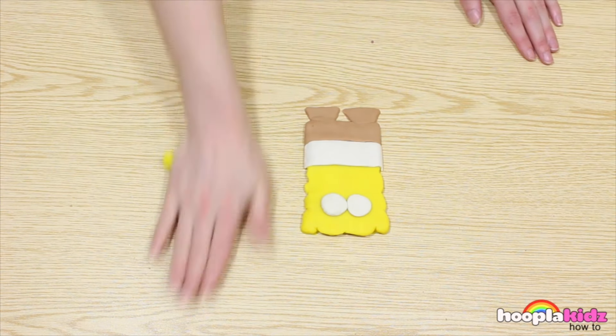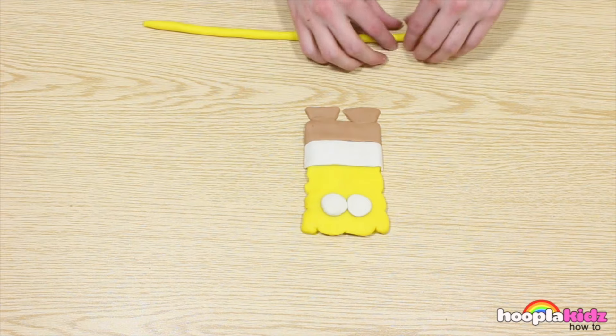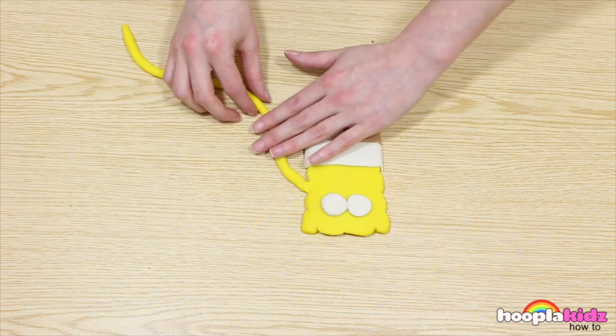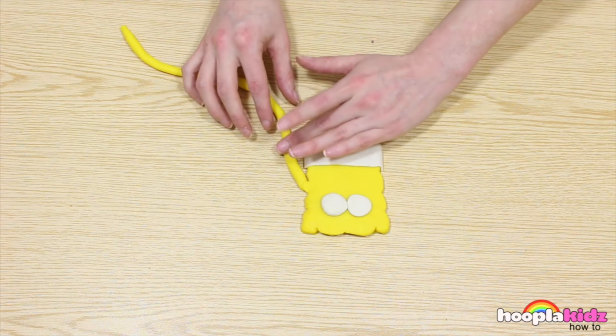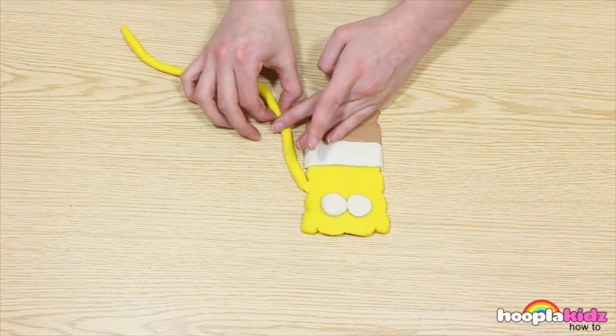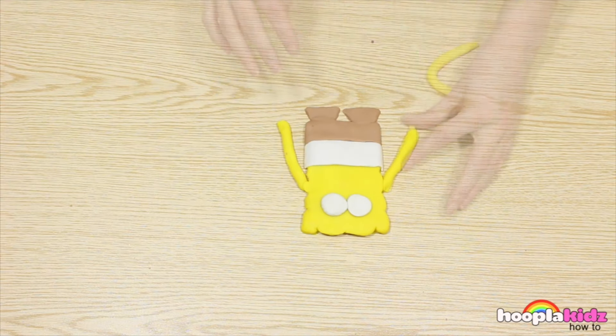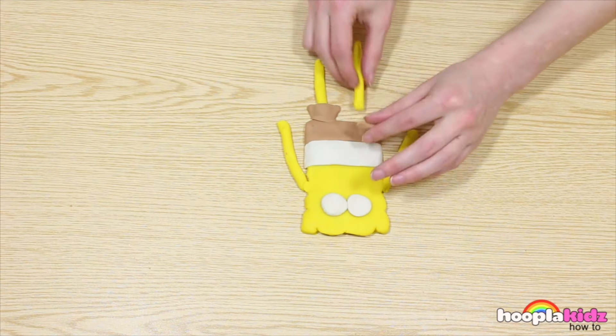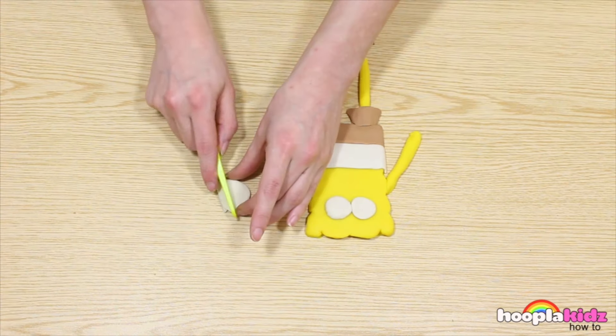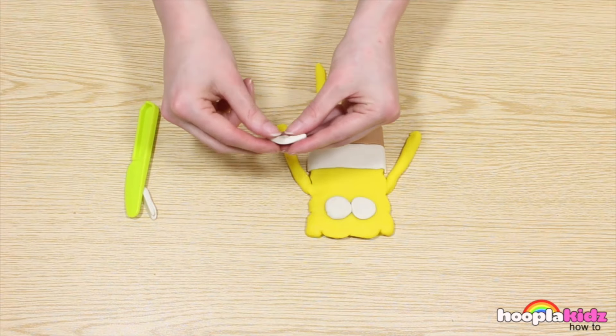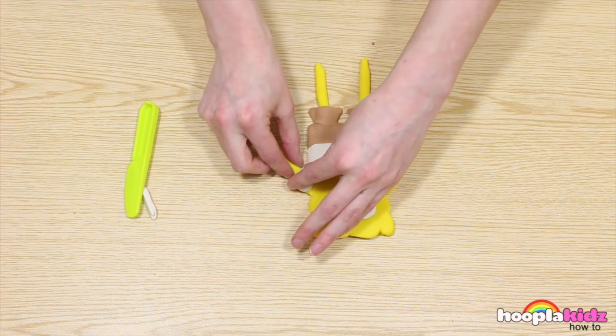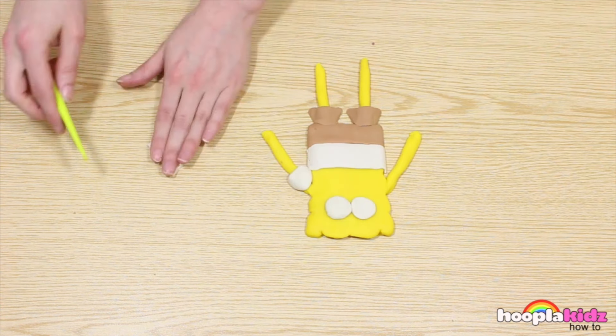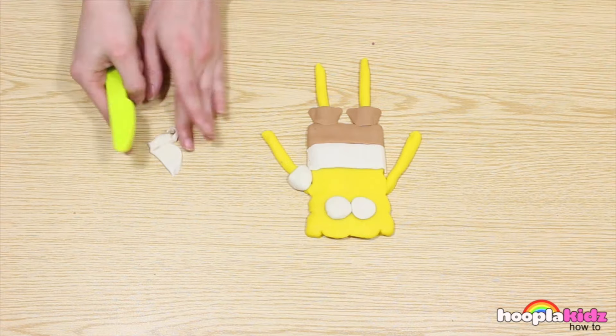We're now going to take some of the yellow and roll it out. We need to make SpongeBob's arms, of course. Don't forget to make two arms, and also his legs. Using white, we're going to make SpongeBob's sleeves. He's starting to look like SpongeBob already. Don't forget to do both arms.